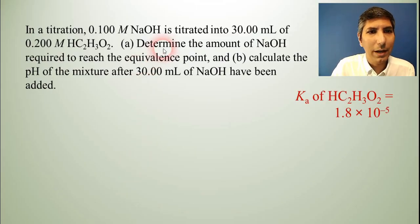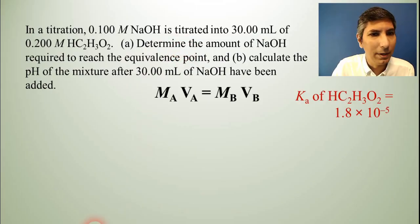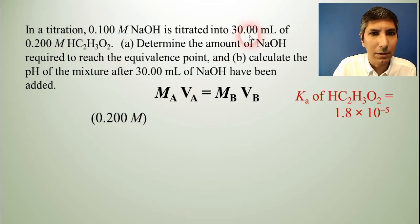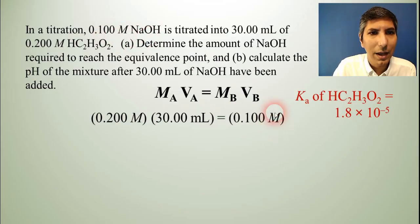So in order to solve part A, we're going to need to use the titration equation that we learned about in the last video, and so that's MAVA equals MBVB, and we just have to plug and chug. So the molarity of the acid is 0.2, as we get from the problem right here, and the volume of the acid is the 30 milliliters. So we plug that in. On the other side of the equal sign, the molarity of the base is 0.1 molar sodium hydroxide, and the volume of the base, that's what we're solving for.